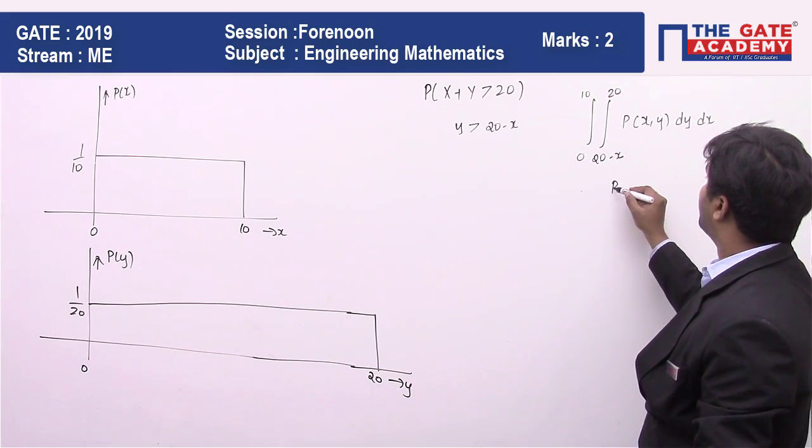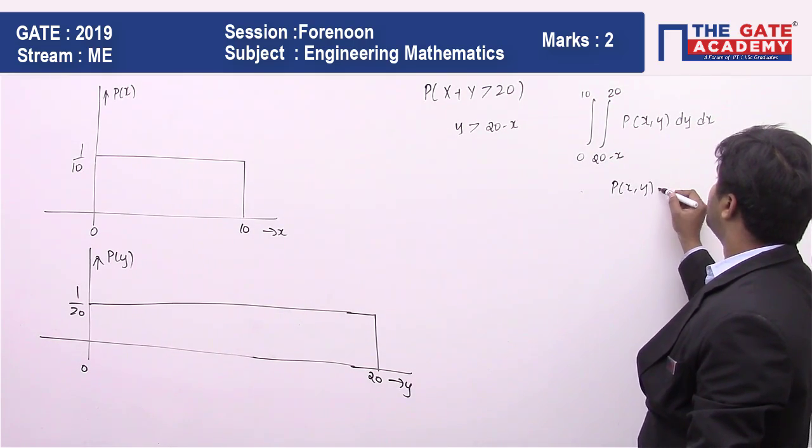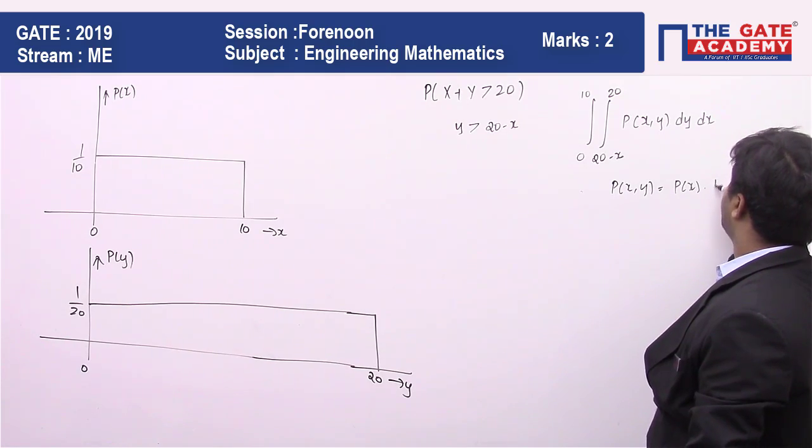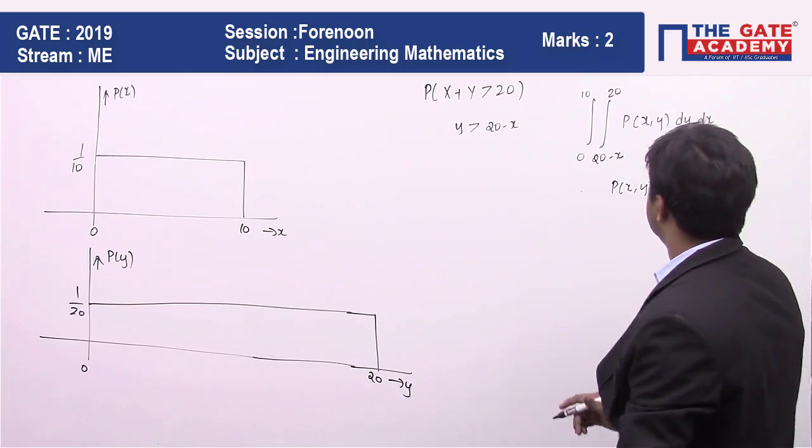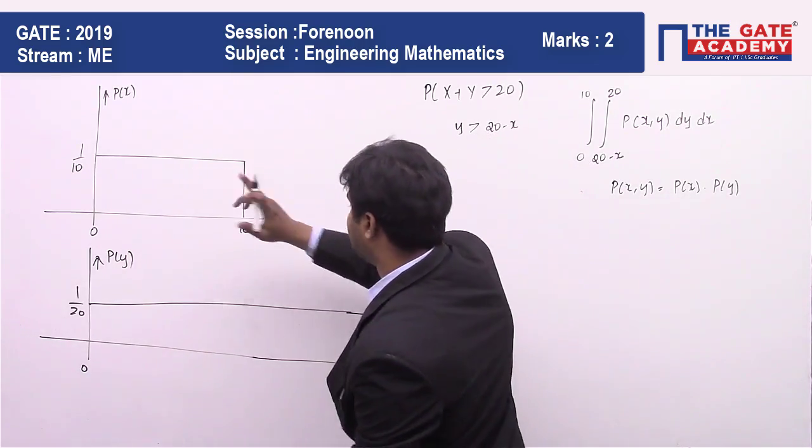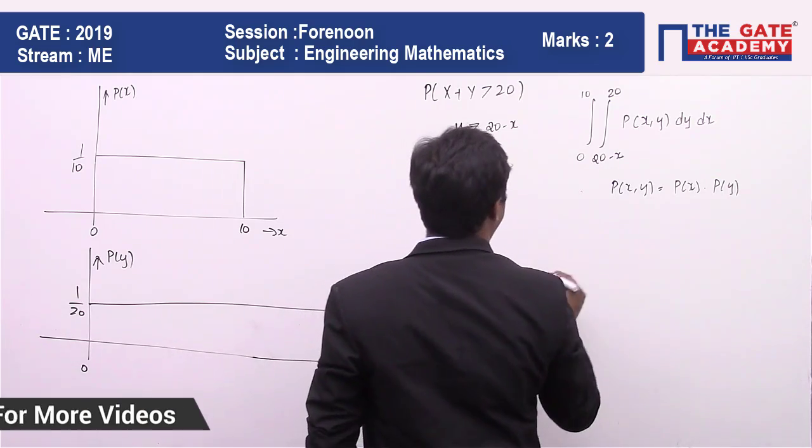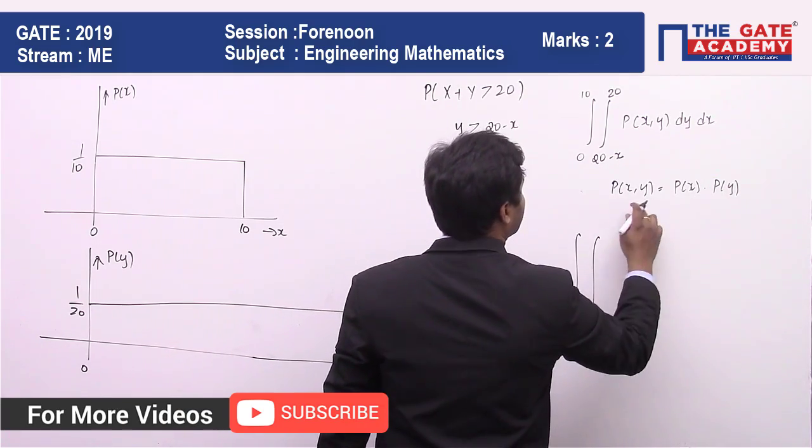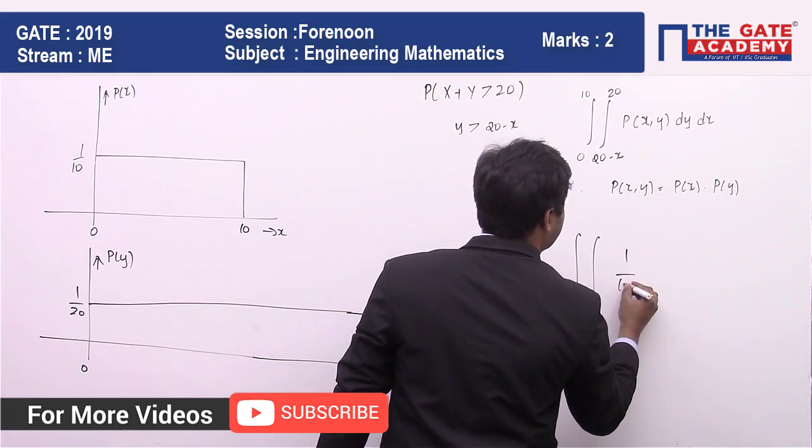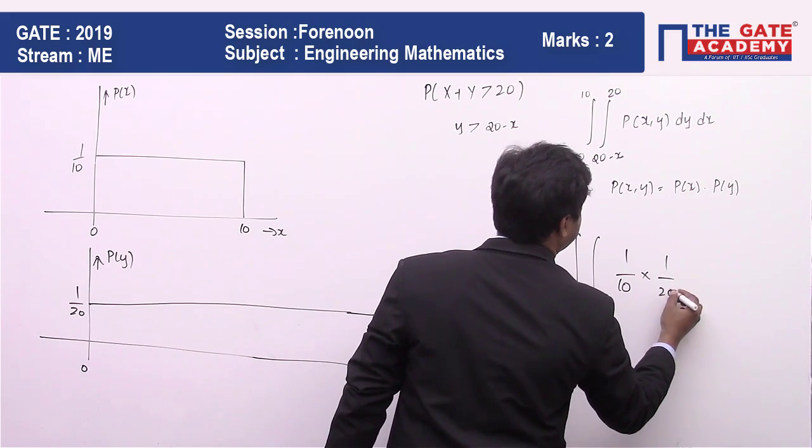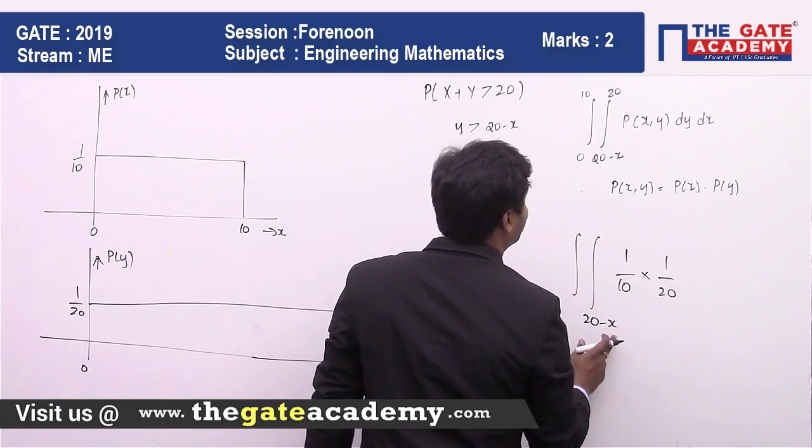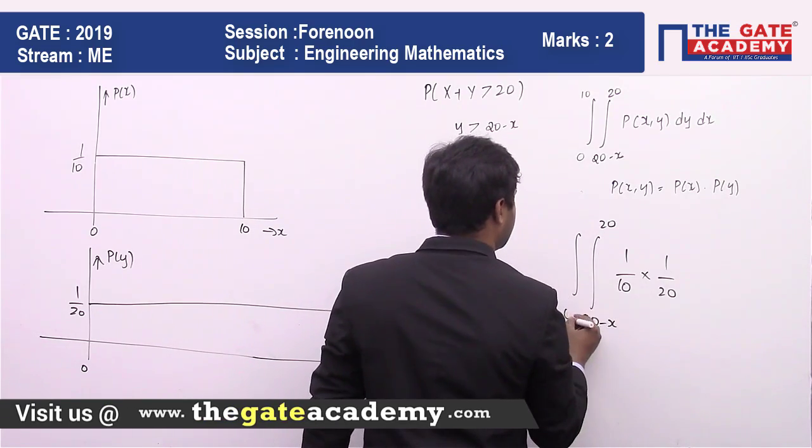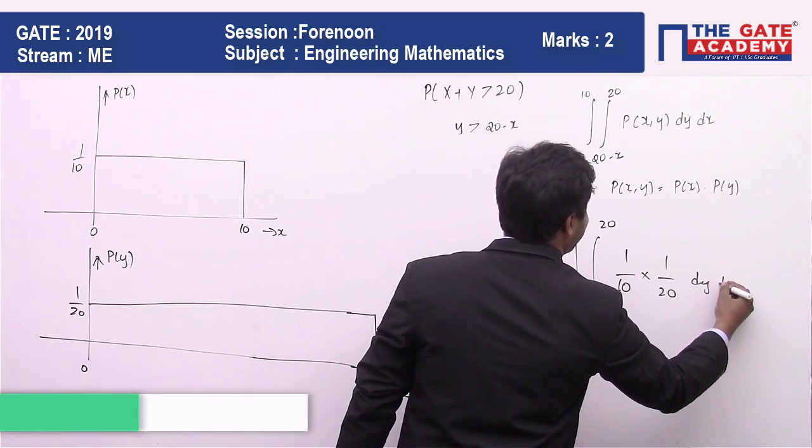And I can take the value of probability of x comma y equal to probability of x multiplied by probability of y, which in this particular range is equal to probability of x is 1 by 10 and probability of y is 1 by 20. If I substitute it, I will have 1 by 10 multiplied by 1 by 20, where you are going to have a range between 20 minus x to 20, 0 to 10, dy dx.